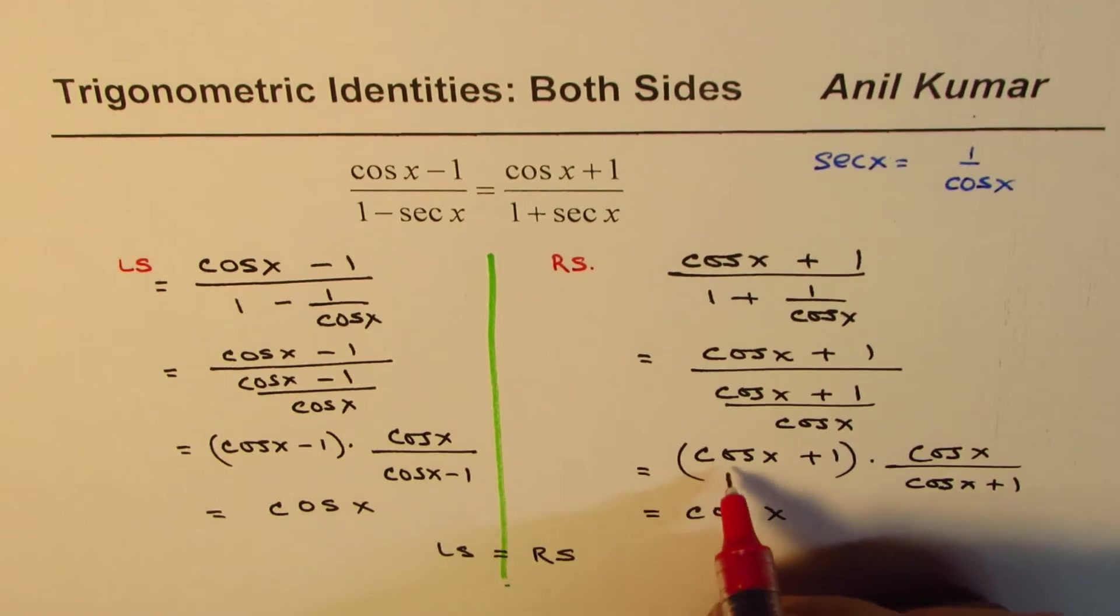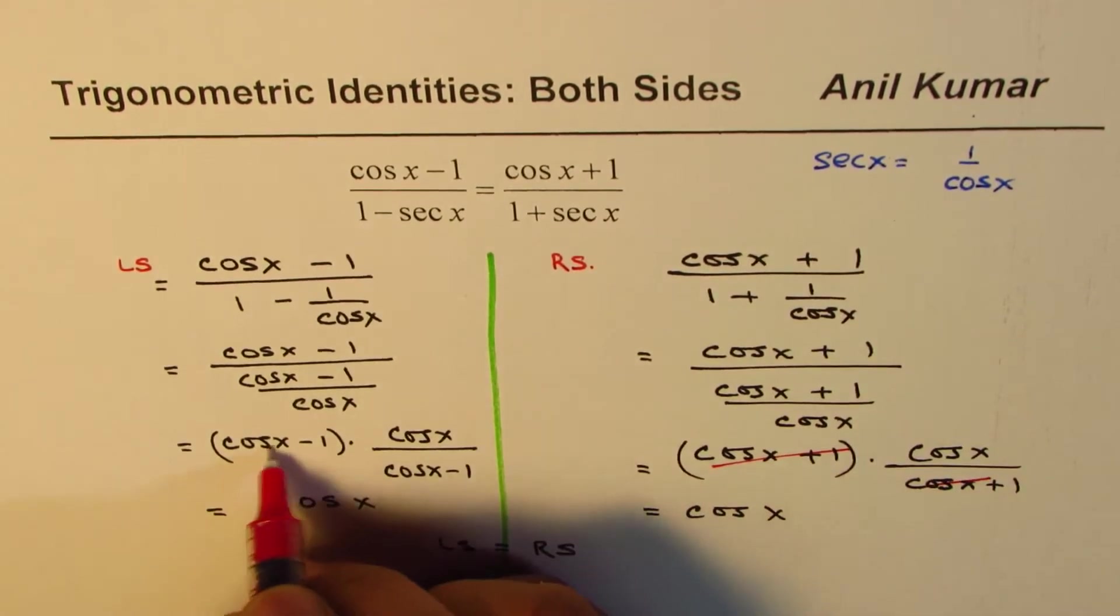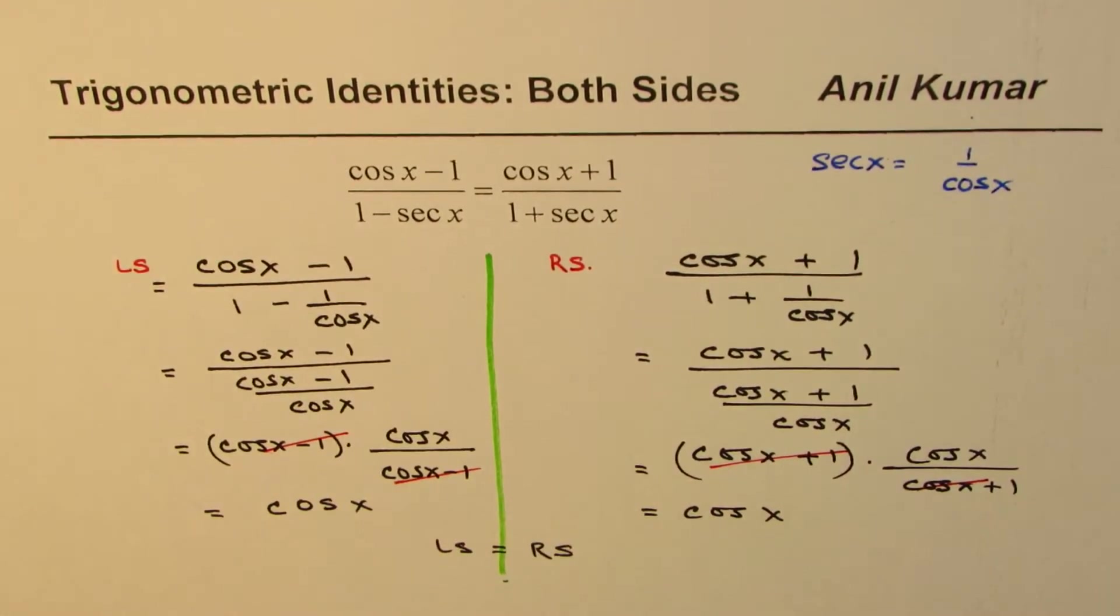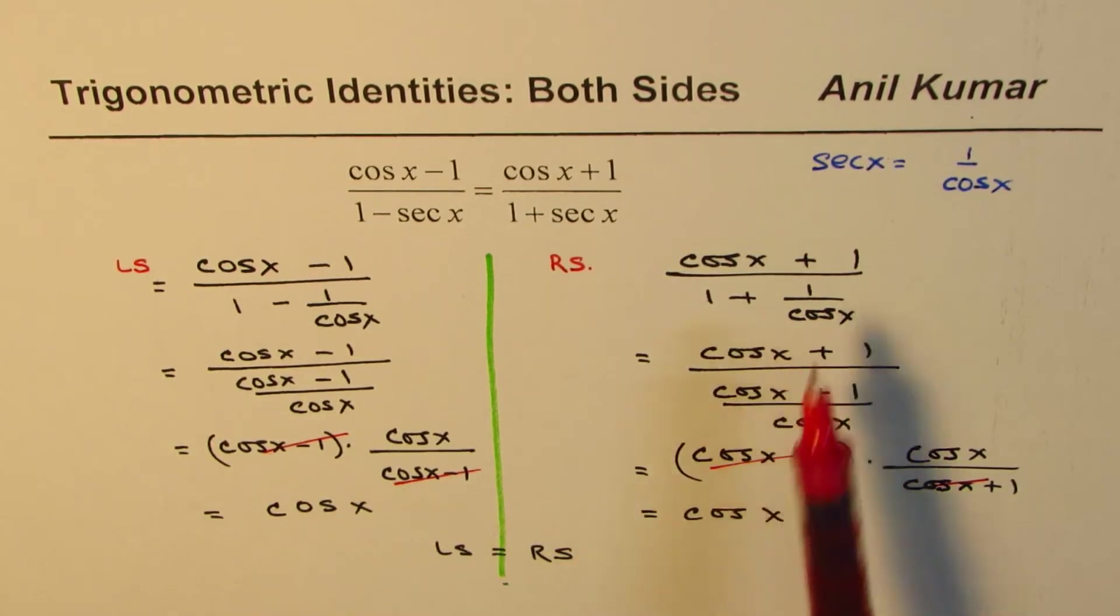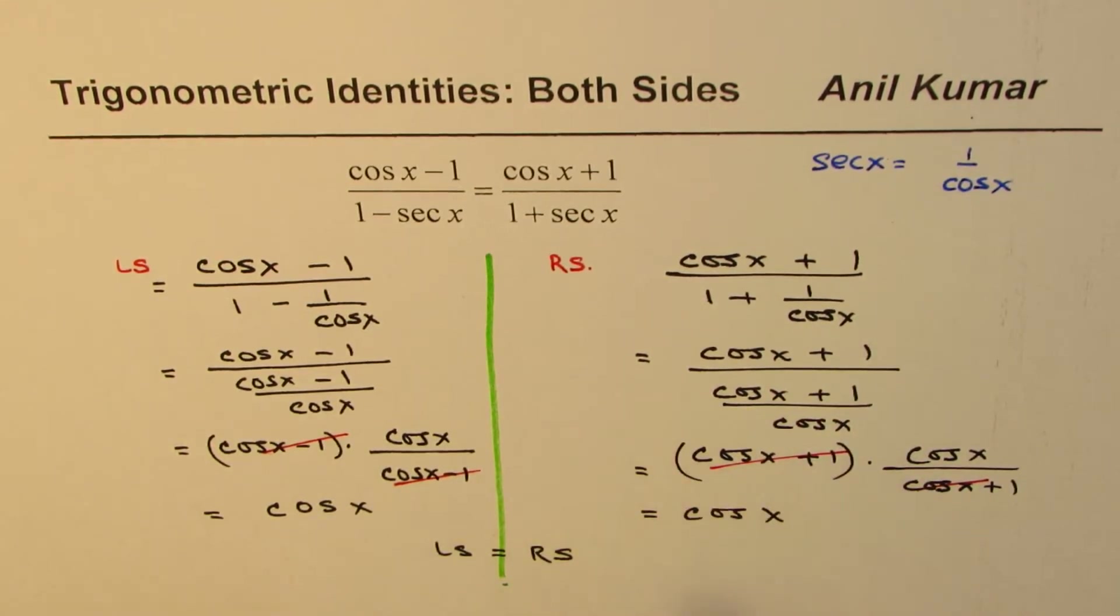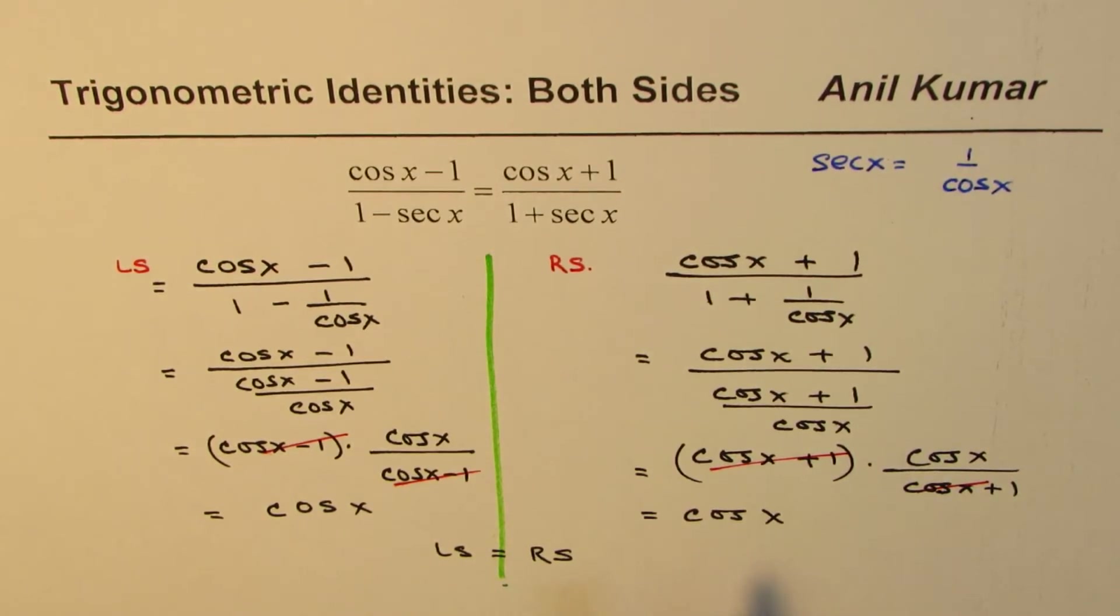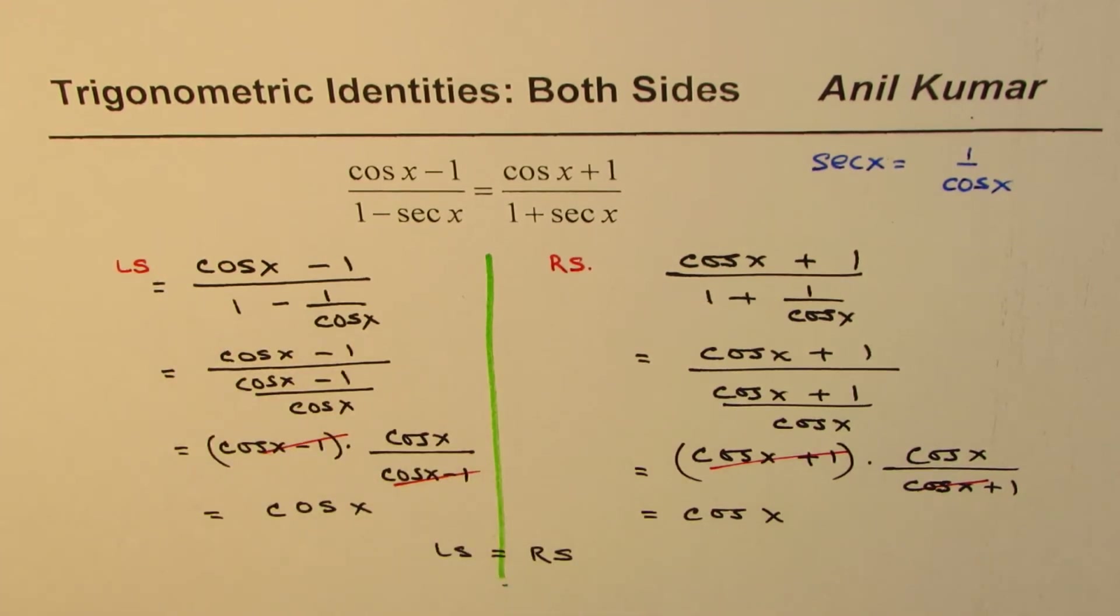That is how you could do it - it becomes very simple. We could have gone from here to there, but I think this is a very simple process. Some identities are better proven by using both left and right sides. We can come to a common result and then say, since both of them are equal, left side equals right side. That's the concept here to understand.